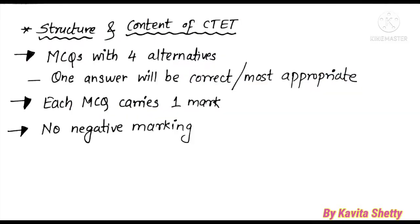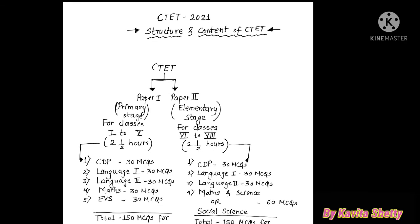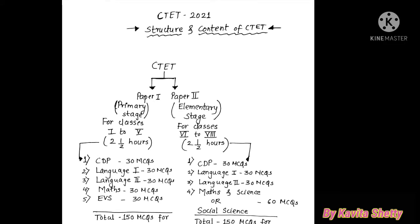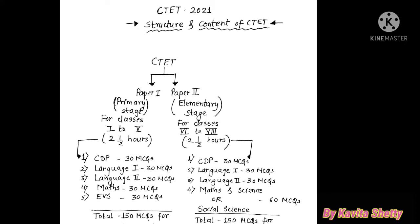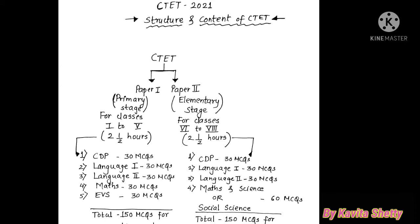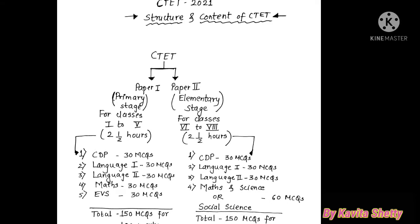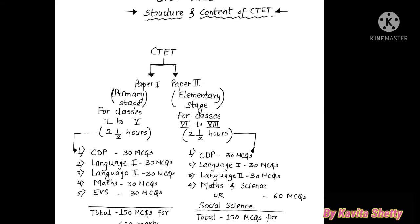Regarding structure: there will be MCQs with four alternatives, one correct answer, each carrying one mark with no negative marking. CTET has Paper 1 and Paper 2. Those who want to become teachers for primary level (Classes 1 to 5) must give Paper 1, and those for elementary level (Classes 6 to 8) must give Paper 2. A candidate can attend both papers. Each paper will be two and a half hours long.